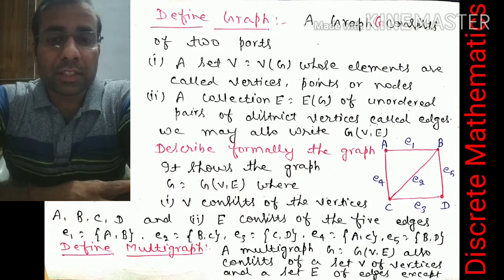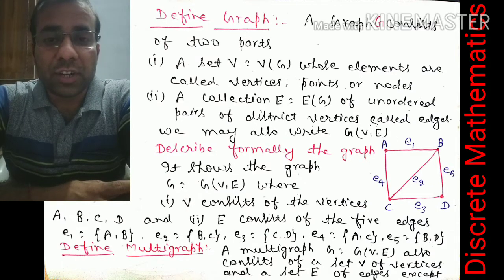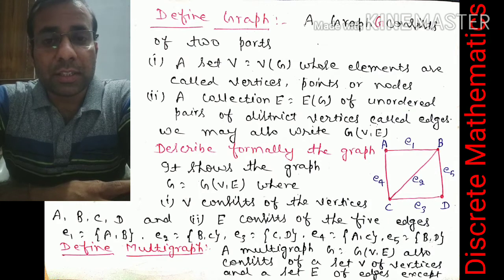The two endpoints of an edge are called vertices or nodes. For example, if we have a triangle A, B, C, then A, B, and C are known as vertices, and AB, BC, and AC are known as edges.